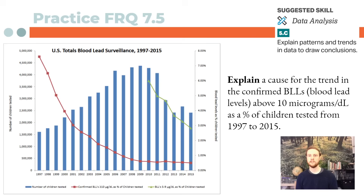For today's practice question, look at this graph. In blue is the number of children tested for lead; in red, the number of children with confirmed blood lead levels above 10 micrograms per deciliter (expressed as a percentage of children tested on the right axis); and in green, the percentage of children testing above 5 micrograms per deciliter. The question: explain a cause for the trend in confirmed blood lead levels above 10 micrograms per deciliter as a percentage of children tested from 1997 to 2015.